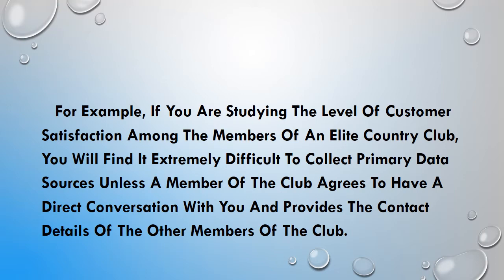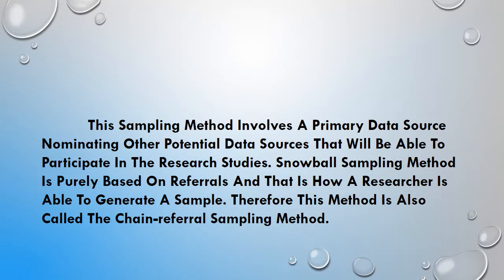Take another example. If you are studying the level of customer satisfaction among the members of an elite country club, you will find it extremely difficult to collect primary data sources unless a member of the club agrees to have a direct conversation with you and provides the contact details of the other members. This sampling method involves primary data sources where one person nominates another person as a potential data source to participate in the research study.